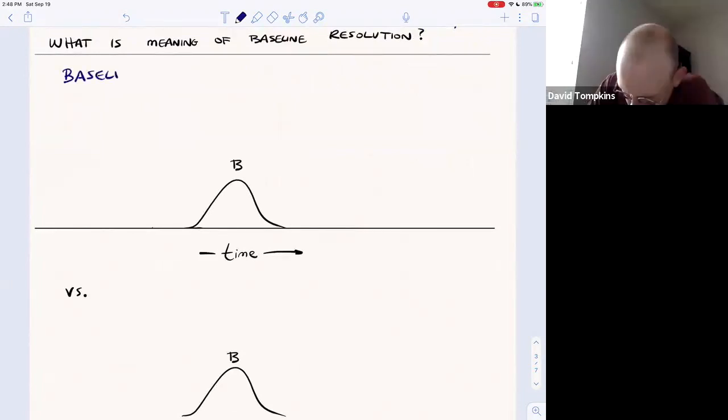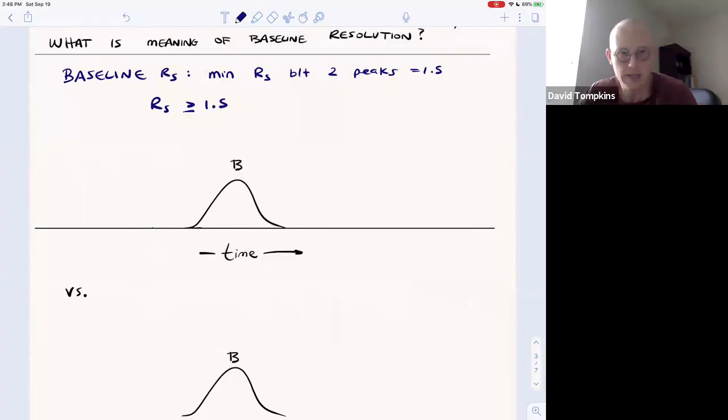So let me show you below the meaning of baseline resolution. So for baseline resolution, the minimum resolution between two peaks, and any two peaks, as long as that resolution between them is greater than or equal to 1.5, those are considered baseline resolved.